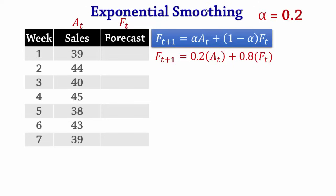Since the forecast requires both actual and forecast values from the last period, we are sometimes given a forecast value for the first period. If no forecast value for the first period is given, we assume F1 = A1 — that is, the first forecast value is assumed to be the first actual value. So F1 = 39.